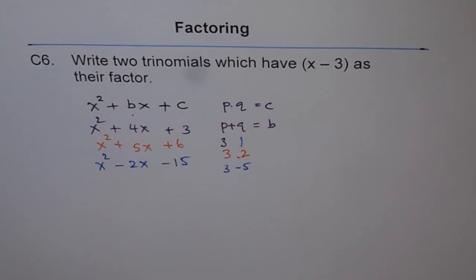So like this, you can make an array of trinomials, whose one of the factors will be x minus 3. That's how we do it. Thank you.